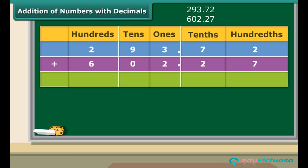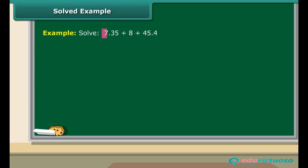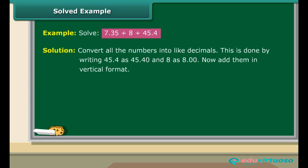Place the digits according to their place value in the table and add the numbers as done for ordinary addition. Place the decimal point before two digits from the right-hand side. Let us now try to solve 7.35 plus 8 plus 45.4. Since 7.35, 45.4, and 8 are unlike decimals, they need to be converted into like decimals. Write 45.4 as 45.40 and 8 as 8.00. Now add the numbers in vertical format. The result of this addition is 60.75.